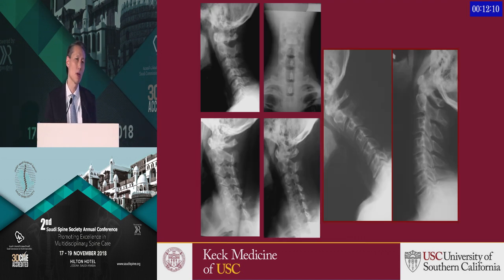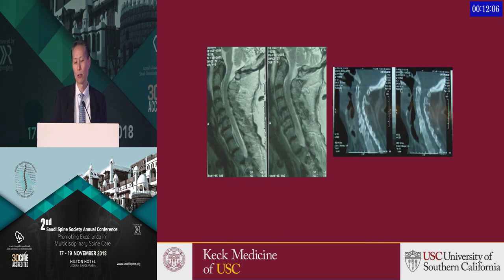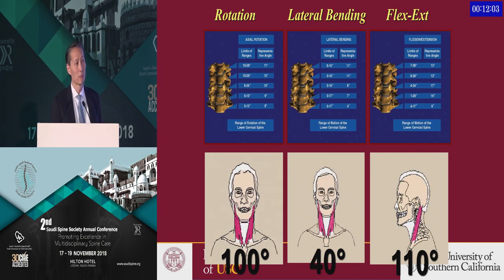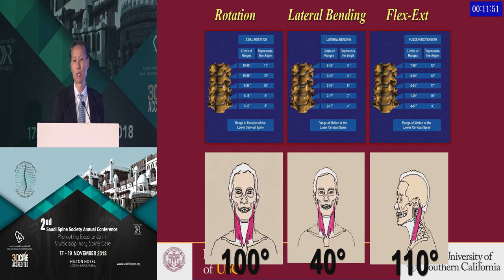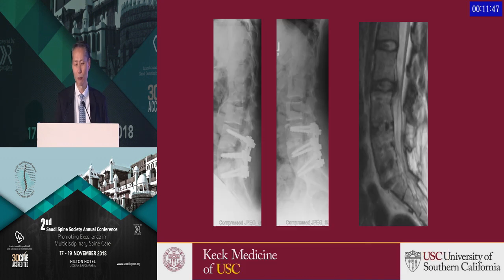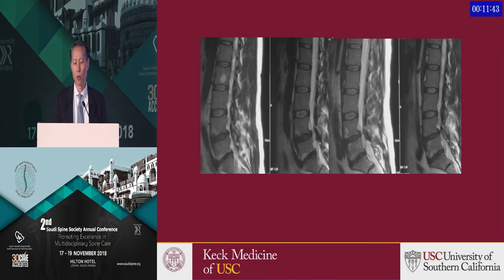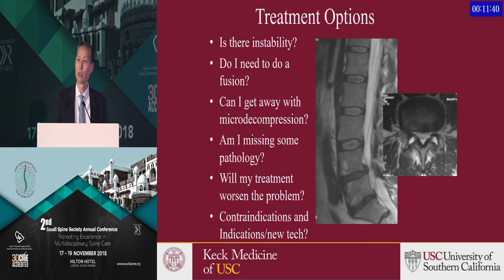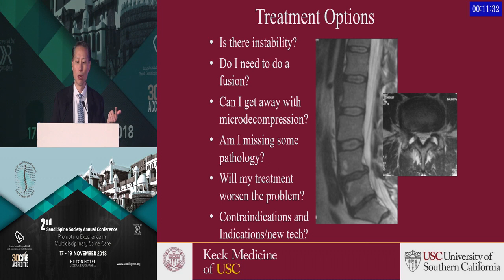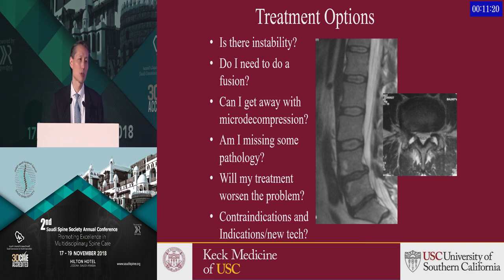How does this apply to the spine? We have great regular images, but we know the spine is moving, especially as we move to newer technologies trying to preserve motion. Dynamic MRI in different positions may be the best way to assess patients undergoing cervical or lumbar arthroplasty or any motion preservation device. It also helps us answer clinical questions: Is there instability? Should I do a decompression or fusion? What about the adjacent segment?